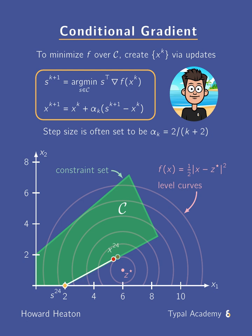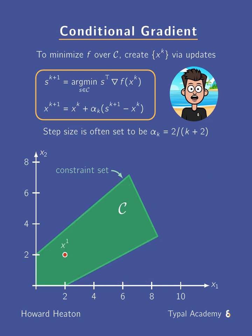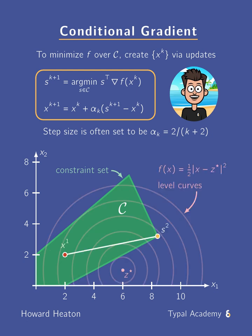Here, an example application of conditional gradient is shown, with the function f as a quadratic centered at a point z*. Level curves are shown in pink, and larger radius corresponds to larger function value. Each s^k is shown by a yellow dot, and each x^k is shown by a red dot.